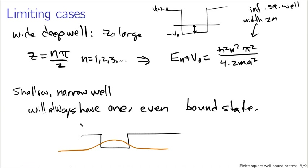Overall, the actual shapes and energy levels are difficult to calculate analytically. The only way to make progress is graphically. That concludes our description of the bound states for the finite square well.